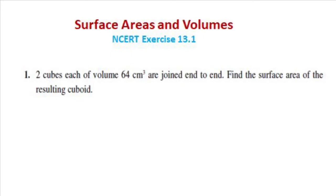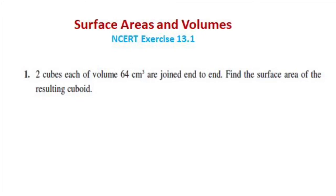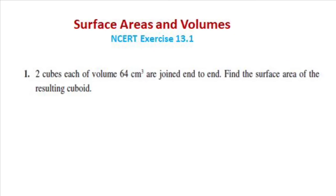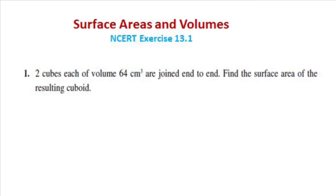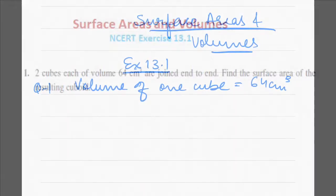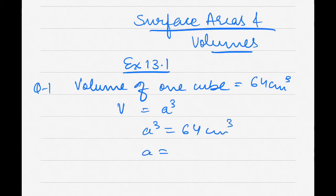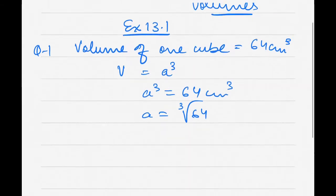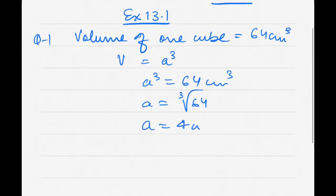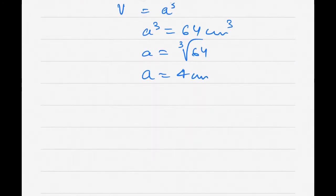Since volume is given, we can directly go to the formula. Volume of one cube is equal to 64 centimeter cube. We know volume of a cube equals A cubed. So A cubed equals 64, which gives A equal to the cube root of 64, which is 4 centimeter. So one side of the cube is 4 centimeter.